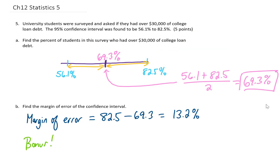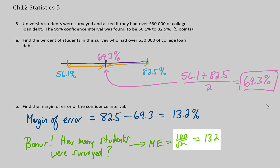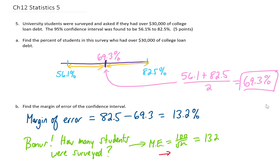As a bonus, let's find how many students were surveyed to give us this margin of error. We know that our margin of error formula looks like this, and we know that our margin of error calculation came out to 13.2%. So if we want to know how many students were surveyed, we can solve this equation for n. We first multiply both sides of this equation by the square root of n. We would get 100 on the left side by itself, and on the right side we would get 13.2 times the square root of n.